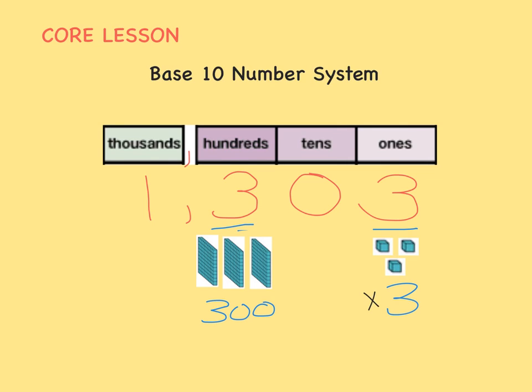3 times 100 equals 300. If you didn't know this fact already, use your knowledge of base 10. We know that going from ones to the tens place, we multiply by 10. And to go from the tens place to the hundreds place, we also multiply by 10.